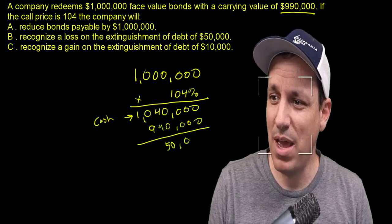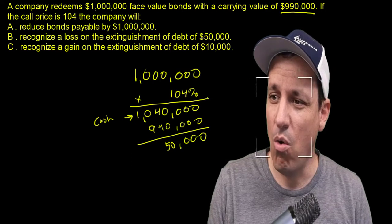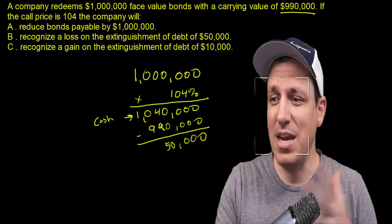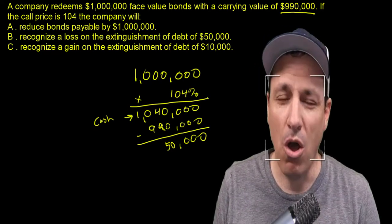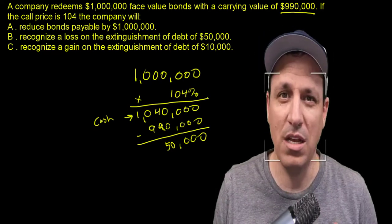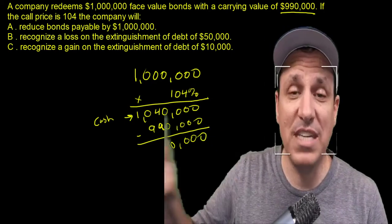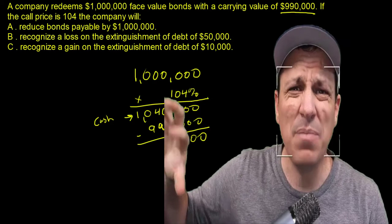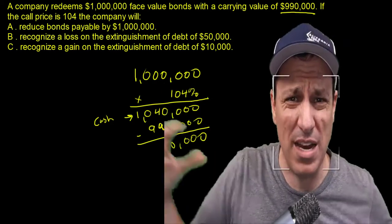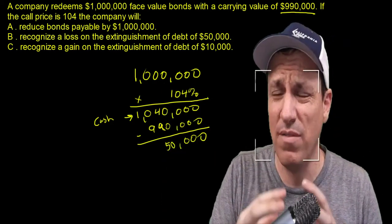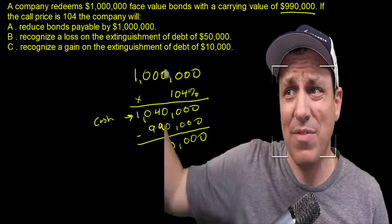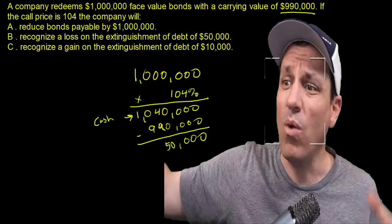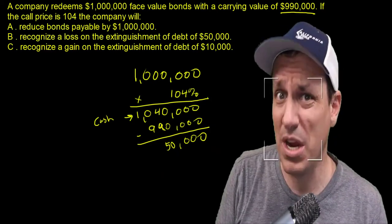All right, so that net difference is going to be a loss - a loss on the extinguishment of debt. We got rid of debt, and as a result of getting rid of debt and paying the market value for the debt, not what was the carrying value, but paying the market value, we have to take the net difference of that market value and the carrying amount and account for that in some way. Well, we paid $50,000 more than what our carrying value was, so we're going to have a loss on the extinguishment of debt.